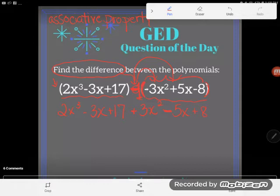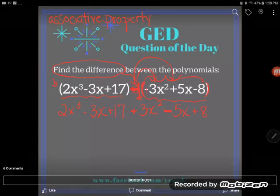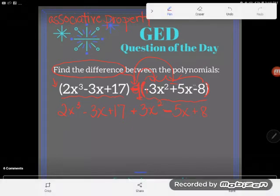Basically I can drop these parentheses, but it's important to see that this negative out here is going to change everybody's signs. The negative 3x turned into a positive, the positive 5x turned into a negative 5x, and the negative 8 turned into a positive 8.